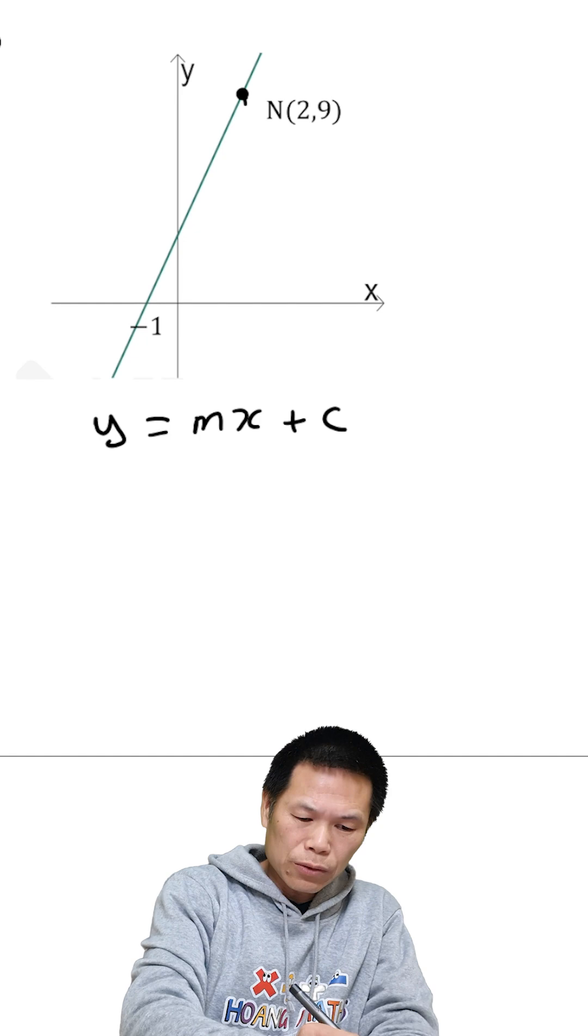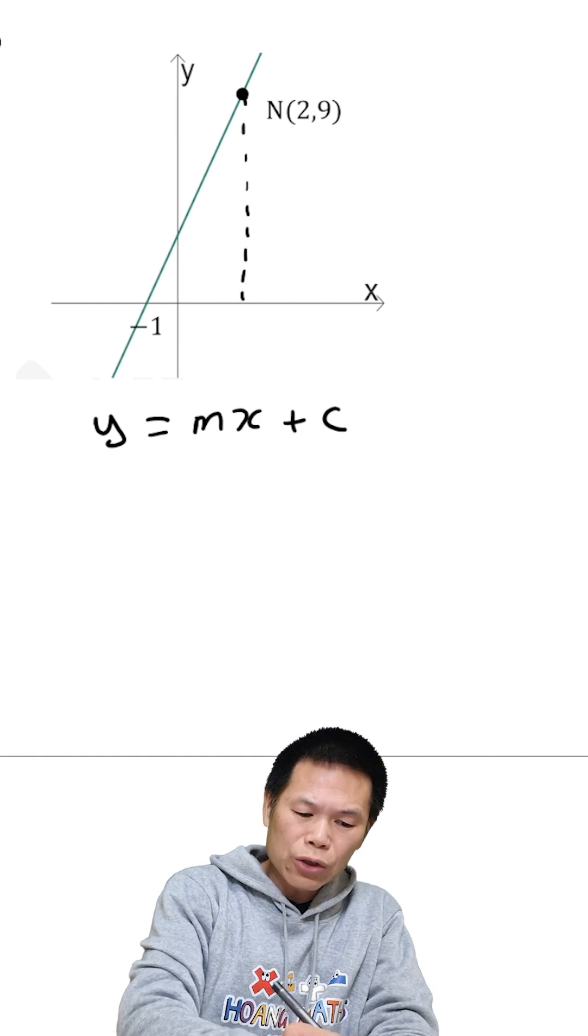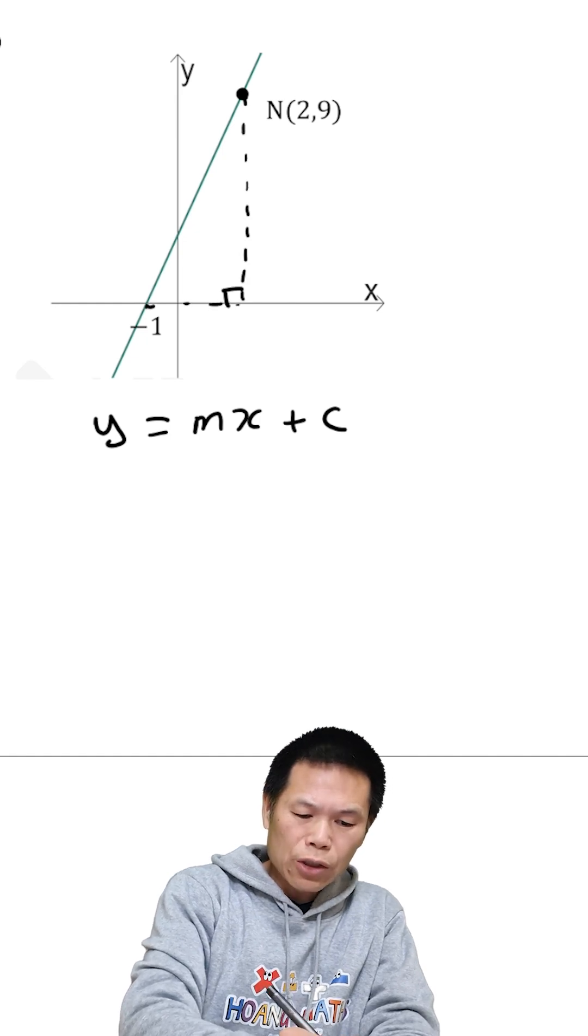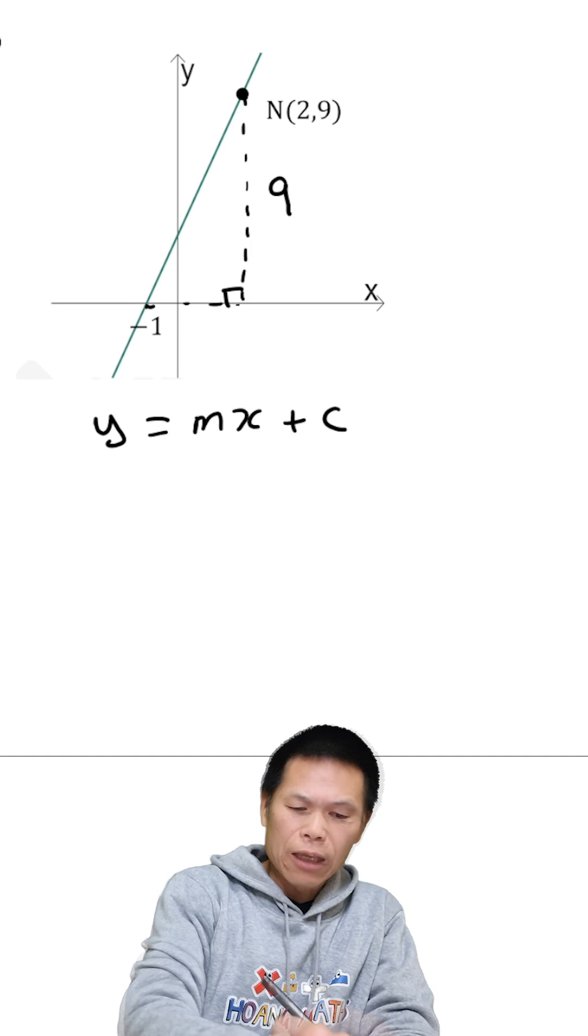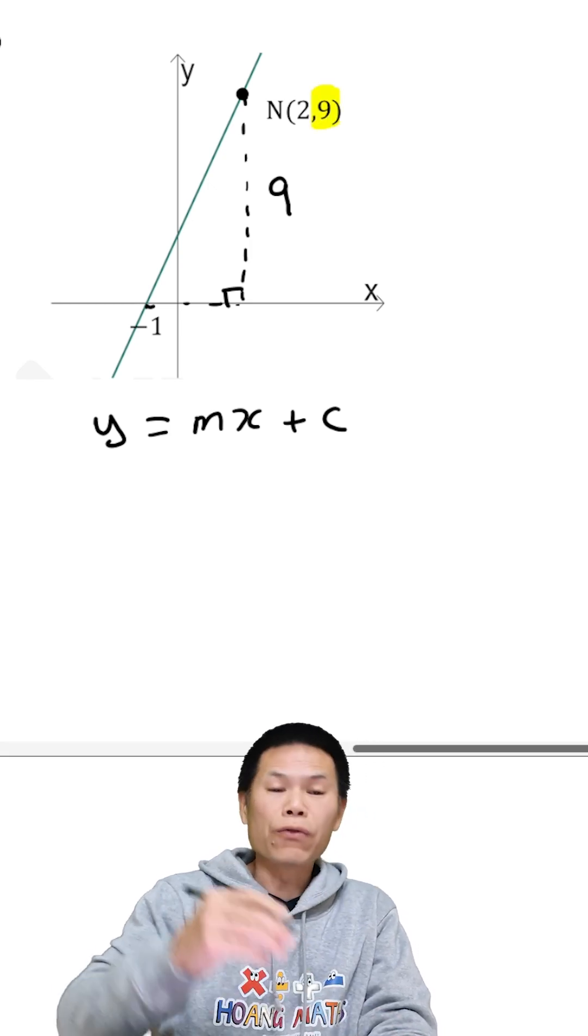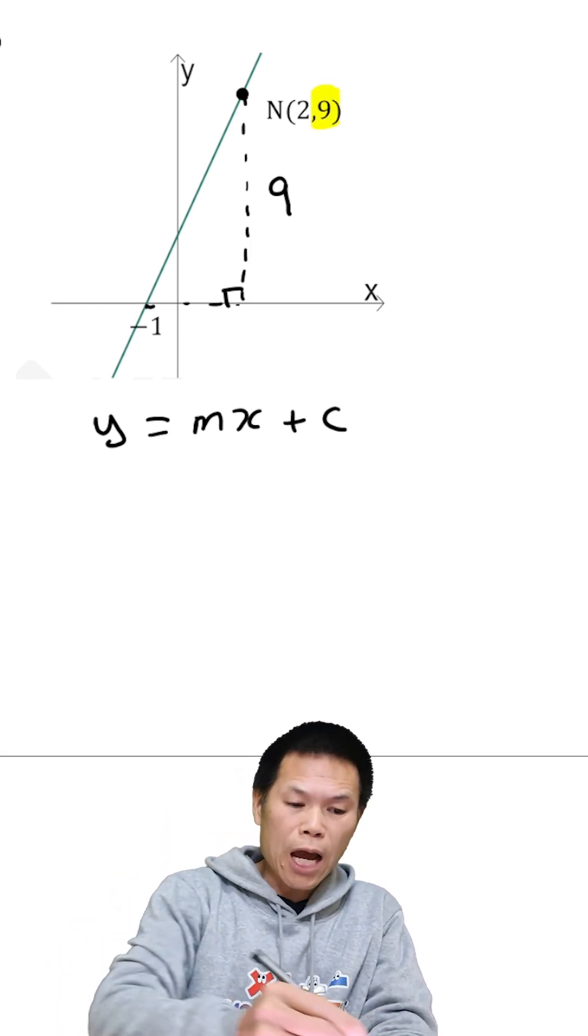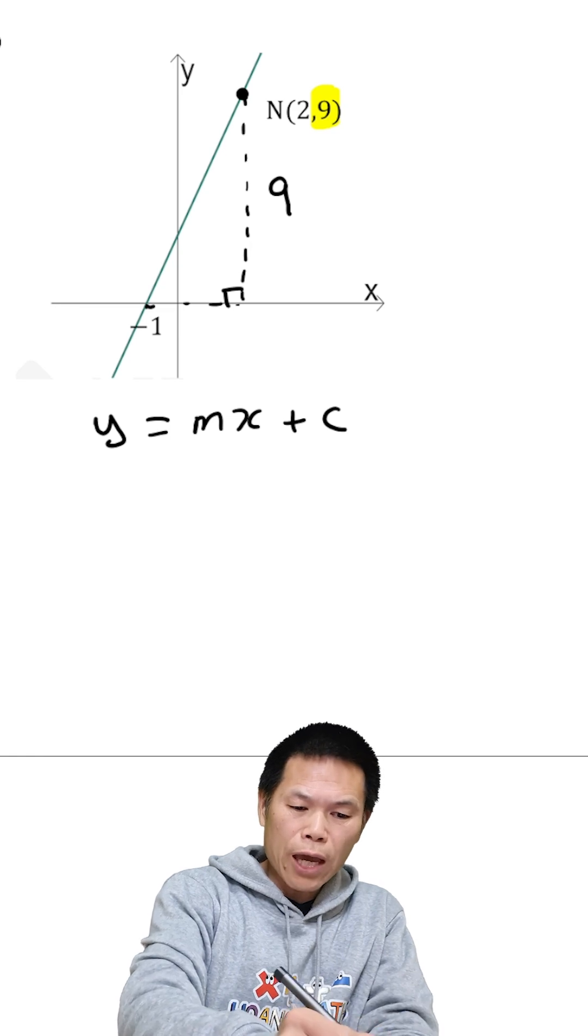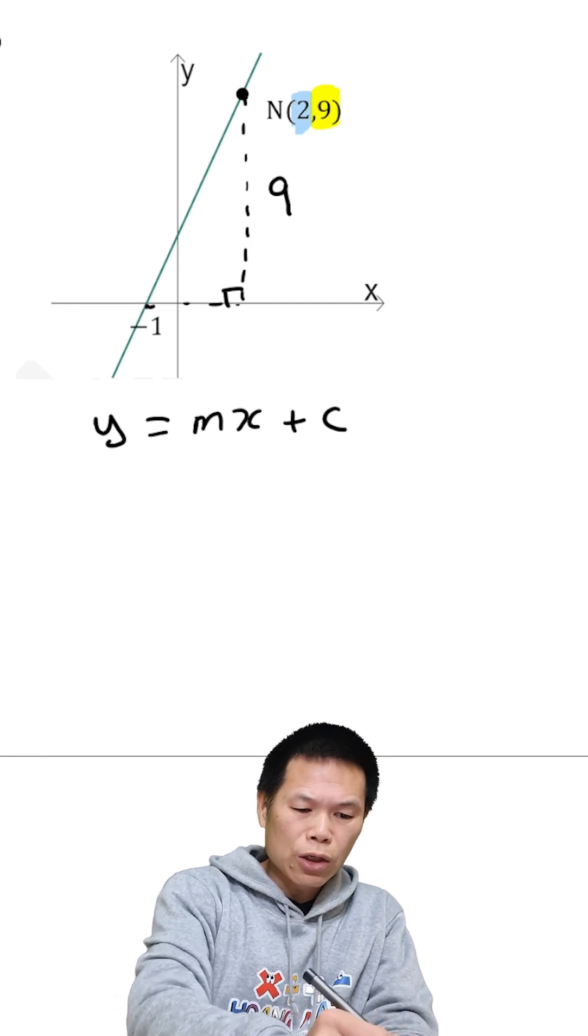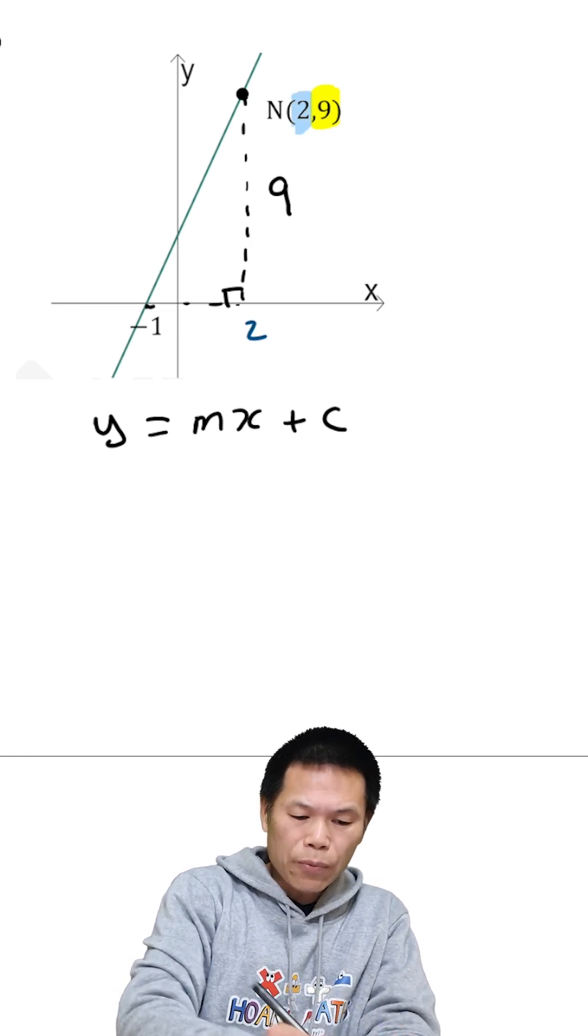So now we just construct a triangle. So the rise is 9 because the y value here is 9. So from 0 to 9 is 9 units. And the x value is 2, so this means that this is 2 here.